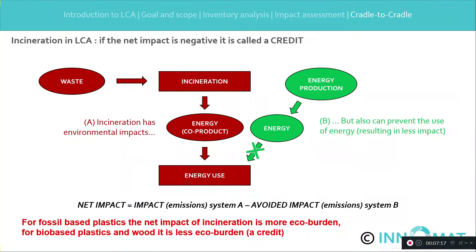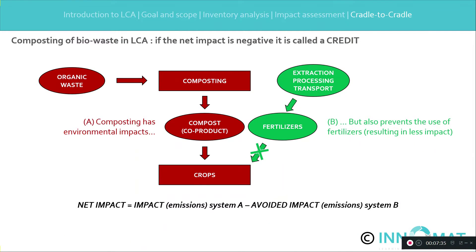For bio-products like wood and bamboo, the eco-burden of incineration is less than that of the avoided energy, since biogenic carbon dioxide is not counted. So, incineration with heat recovery of wood, bamboo, and bioplastics have a credit of negative eco-costs. The same applies for compost from natural materials like grass, leaves, and algae.